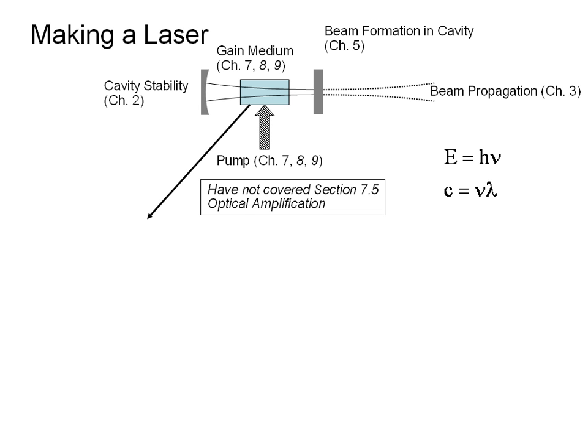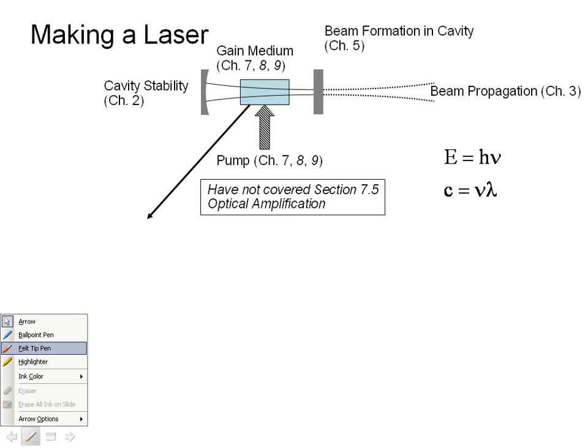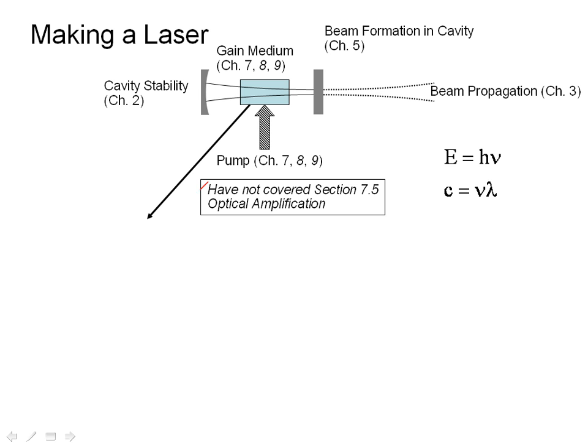The diagram you see here is a schematic or block diagram of a laser. You can see we have identified quite a few things. You can ignore some of this because we're not to this section of the book yet. But you'll notice that we've already covered some aspects of a laser, which is beam propagation and Gaussian beams, which we covered in Chapter 3.